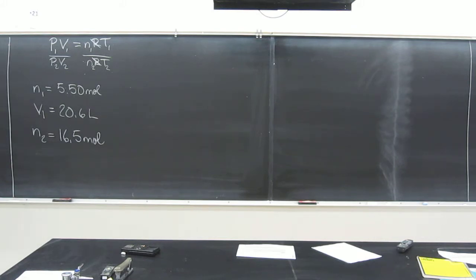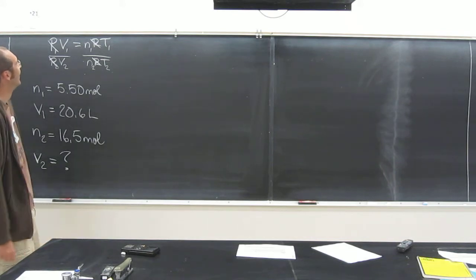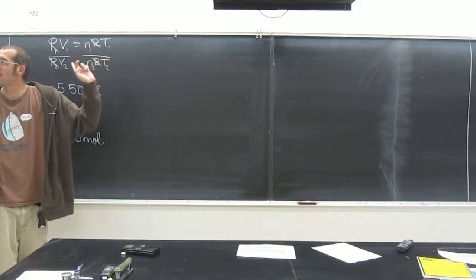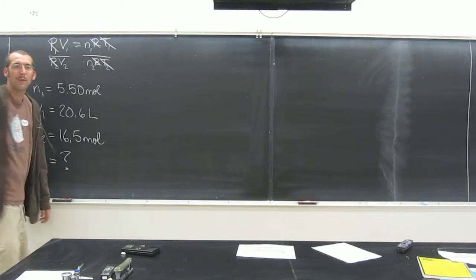And what else? Does it give us anything else? No, but it asks us something. It says how many liters, right? So it's asking us for what? V2. That's what it's asking us for. But it also tells us something else. It says that the pressure and temperature are the same. So that means they've stayed the same. So P1 equals P2, so we can cancel those out. Temperature remains the same too, so T1 equals T2, so we can cancel those out too. Is everybody cool with that?